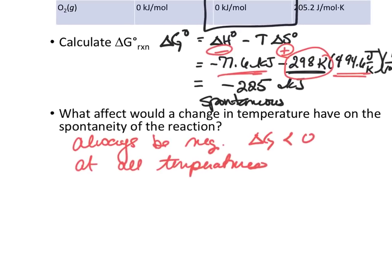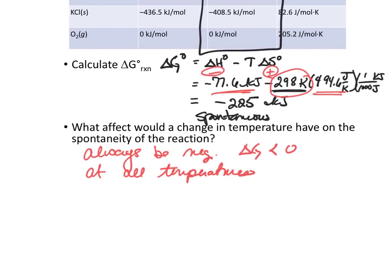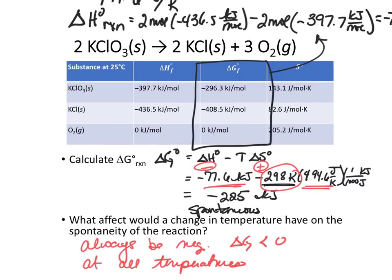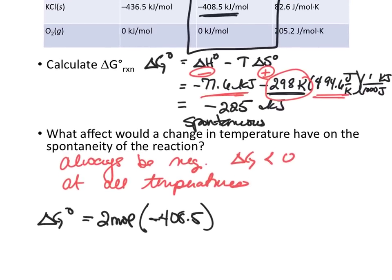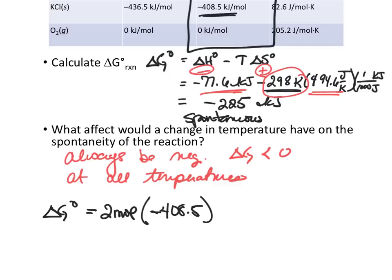Now, what would be the other way that we could calculate delta G just so that we've got it in our notes here? Delta G, we can get standard delta G by using that summation formula. So it would be two times the number of moles, two moles, I mean times the delta G of the products, which was KCl. That was a negative 408.5. You can look back up here. 408.5. And then the zero, which I'm not going to write, minus two moles.